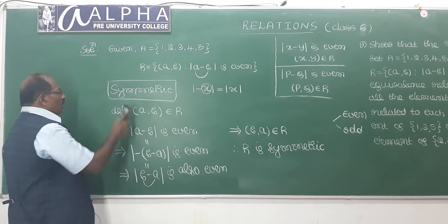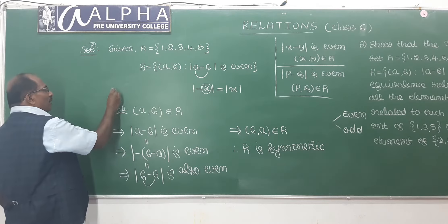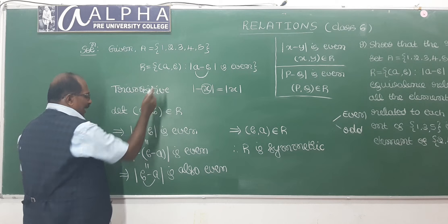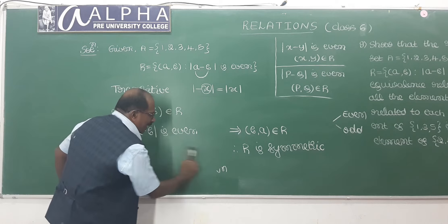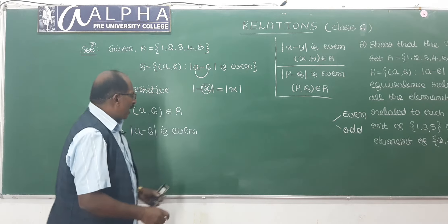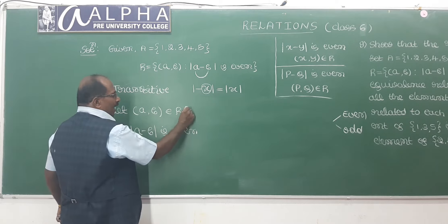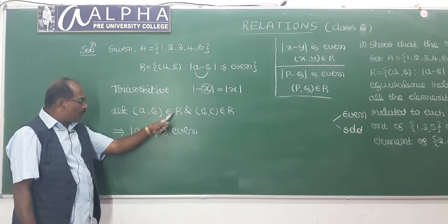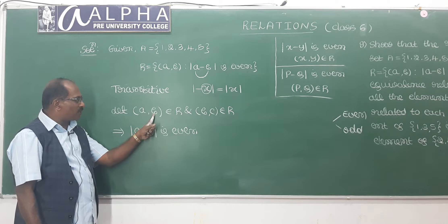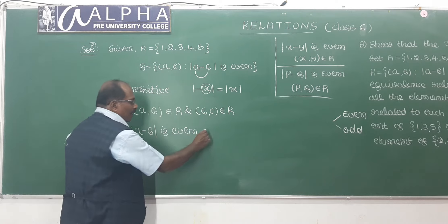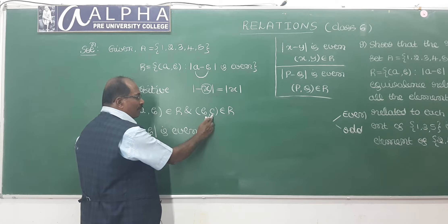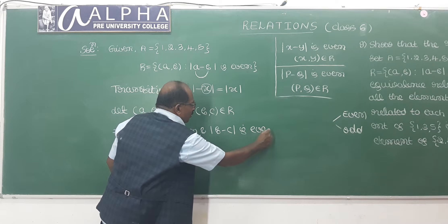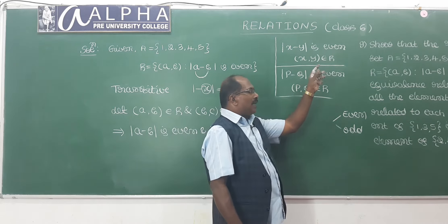Now I prove R is a transitive relation in set A. To prove the transitive nature of the relation, I will consider two ordered pairs (a, b) and (b, c) belonging to R. (a, b) belongs to R means |a - b| is even, and (b, c) belongs to R means |b - c| is even.